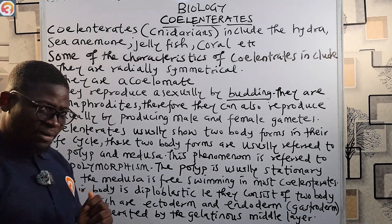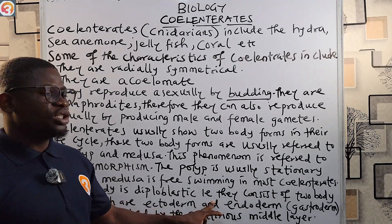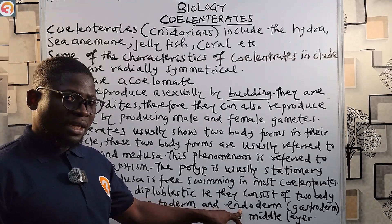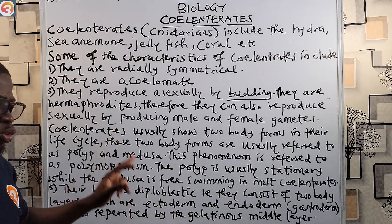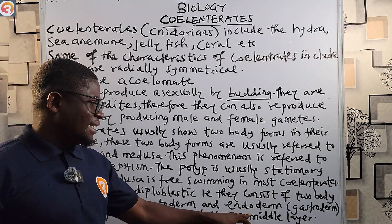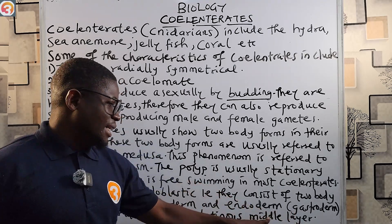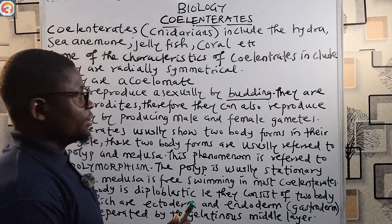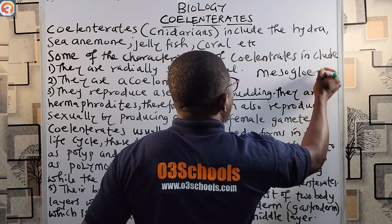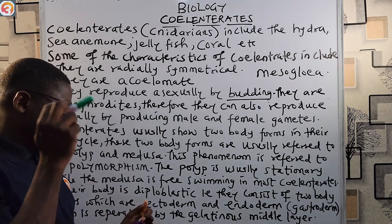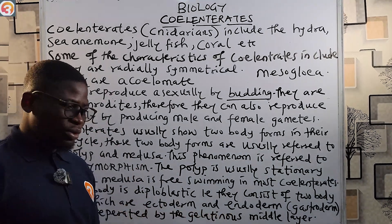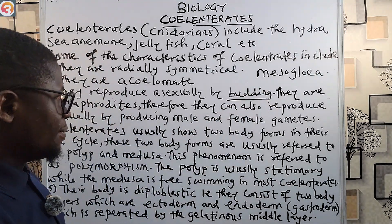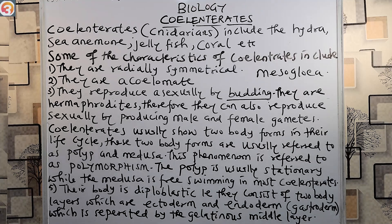Their body is diploblastic — that is, it consists of two body layers: the ectoderm and the endoderm. The endoderm is also called the gastroderm. These two layers are separated by a gelatinous middle layer known as the mesoglia.